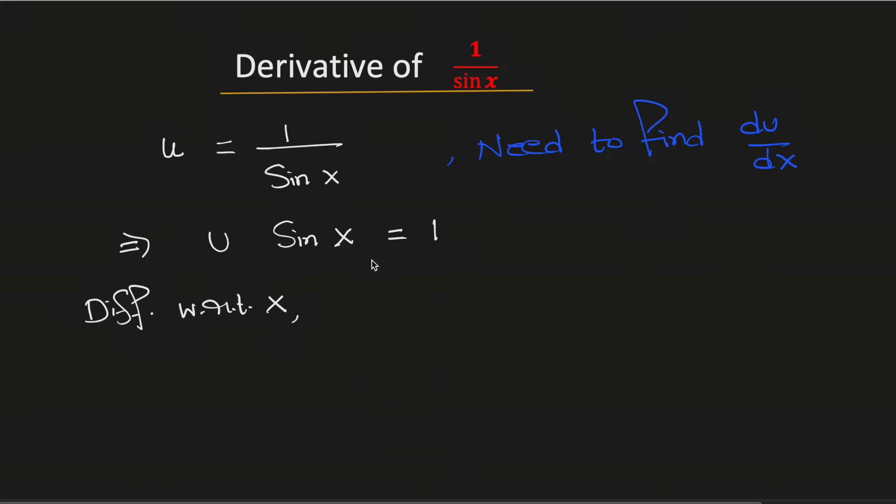By the chain rule of differentiation we get du/dx times sin x plus u times cos x, since the derivative of sin x is cos x. And we know that the derivative of 1 is 0 because 1 is a constant.